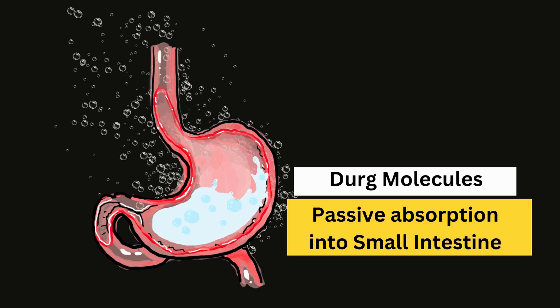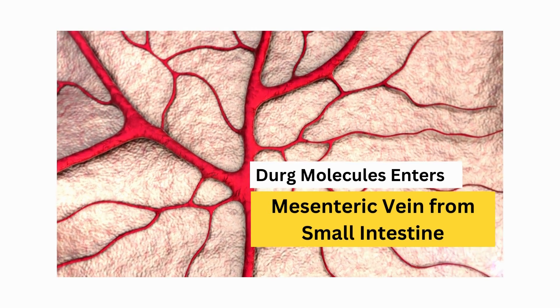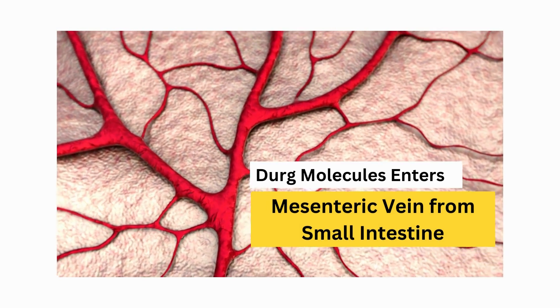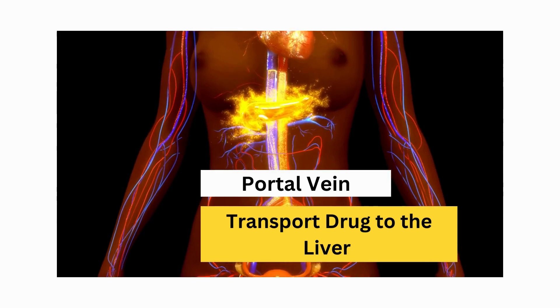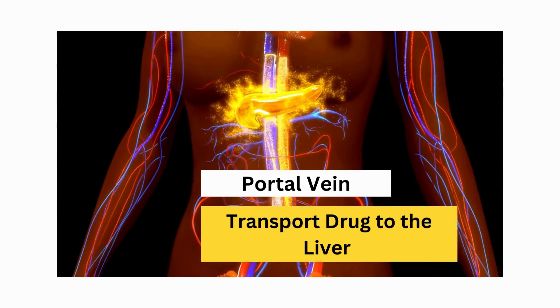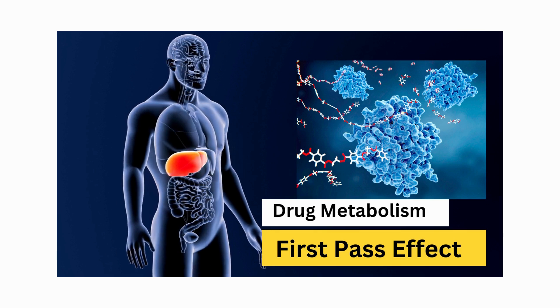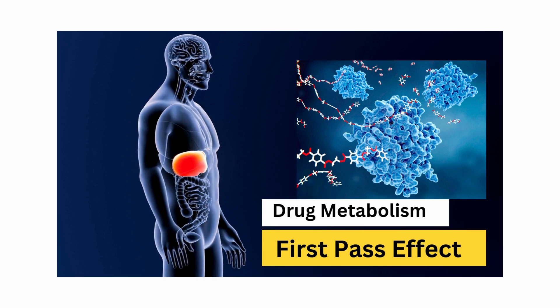The drug then moves to the small intestine, where further dissolution and disintegration occur. In the small intestine wall, the drug is absorbed into the mesenteric vein. The mesenteric vein carries the drug to the portal vein, which transports it to the liver.